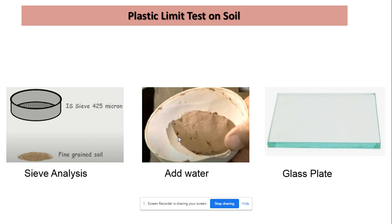The plastic limit is defined for fine-grained soil only, not for coarse-grained soil. First, we take the soil sample and use a 425 micron sieve. The soil that passes through the 425 micron sieve is taken for the test. After obtaining this sieved soil, we add some water to it and make a very plastic, dough-like form, similar to dough prepared for making chapatis.